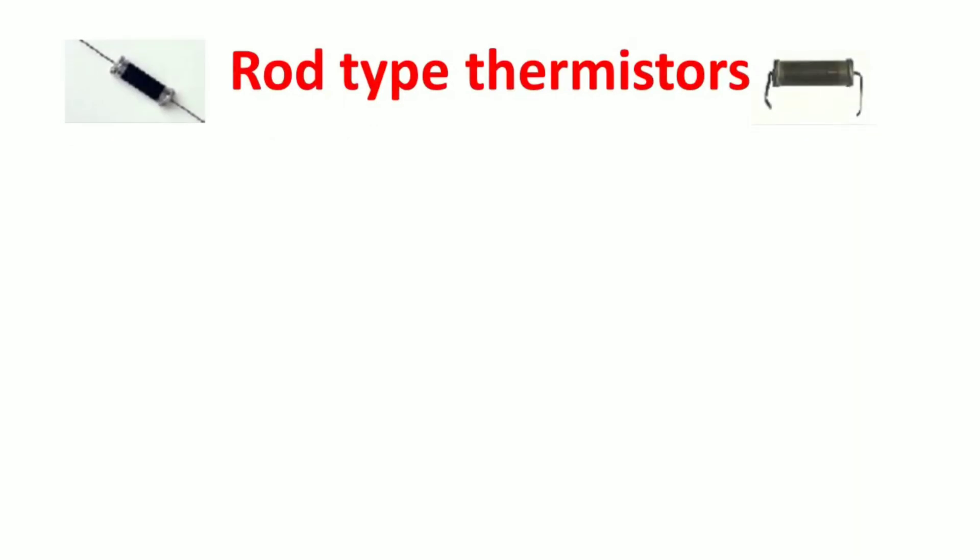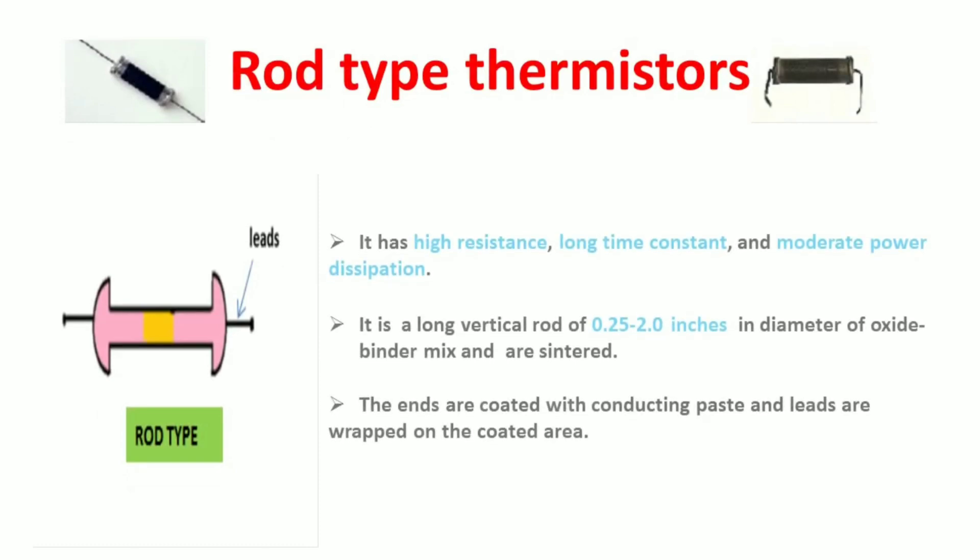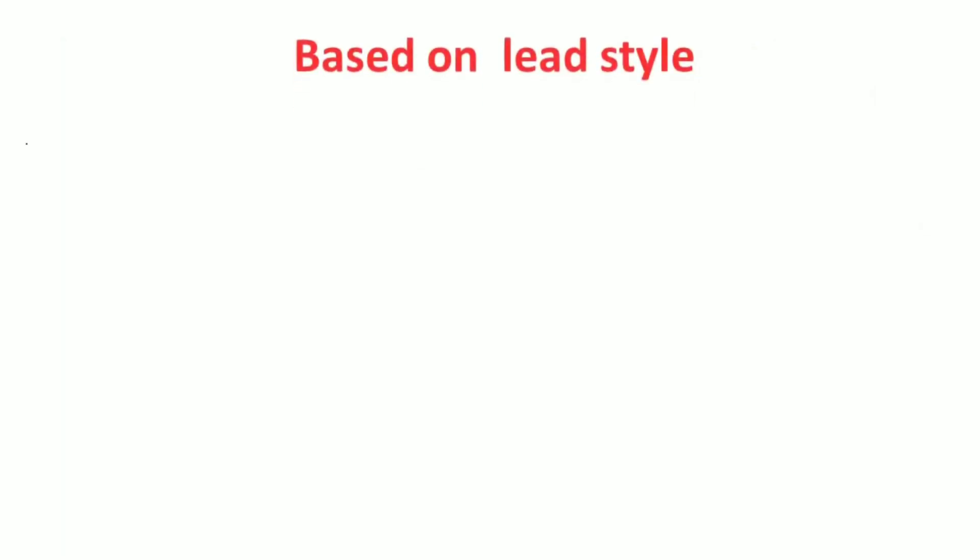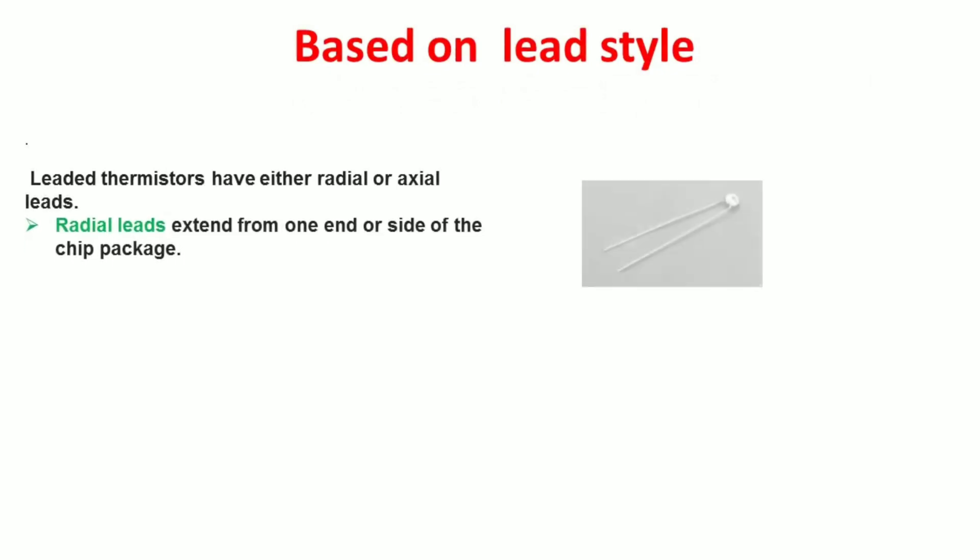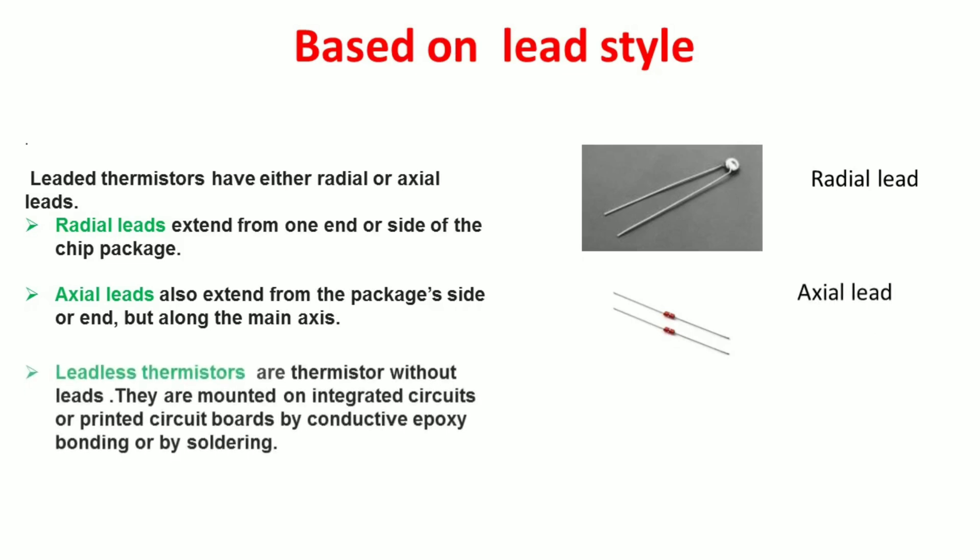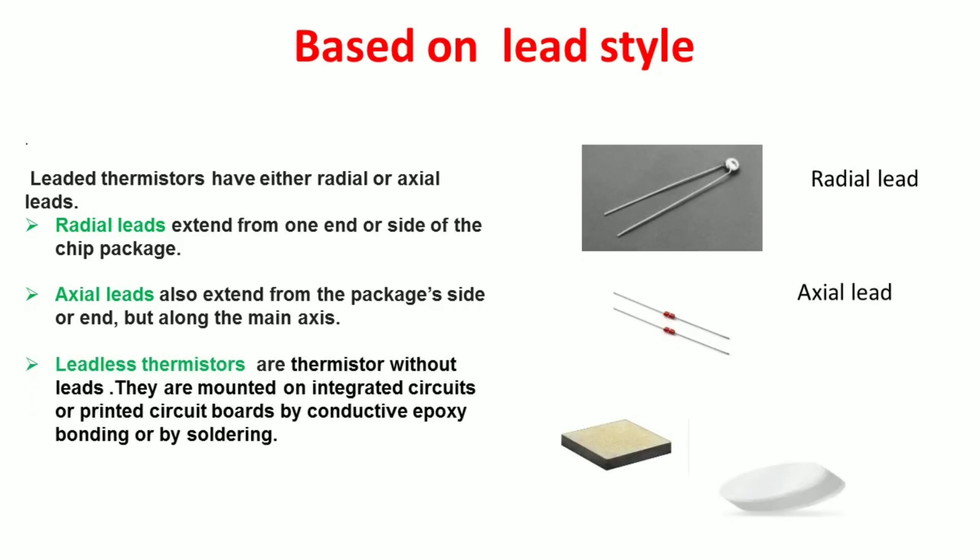And last is rod type. It is a long vertical rod of 0.25 to 2.5 inches in diameter. Its ends are coated with conducting plate and leads are wrapped on the coated area. On the basis of lead style, thermistors are classified as radial, axial, and leadless thermistors. Radial leads extend from one end or side of the chip package. Axial leads also extend from one end or side but along the main axis. Leadless thermistors are thermistors without leads. They are mounted on ICs or PCBs by epoxy bonding or by soldering.